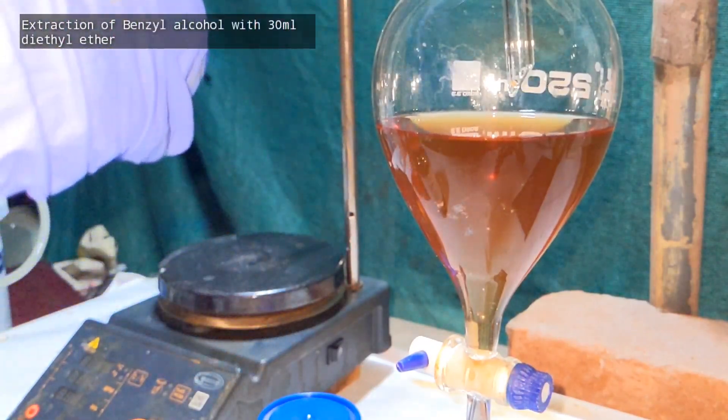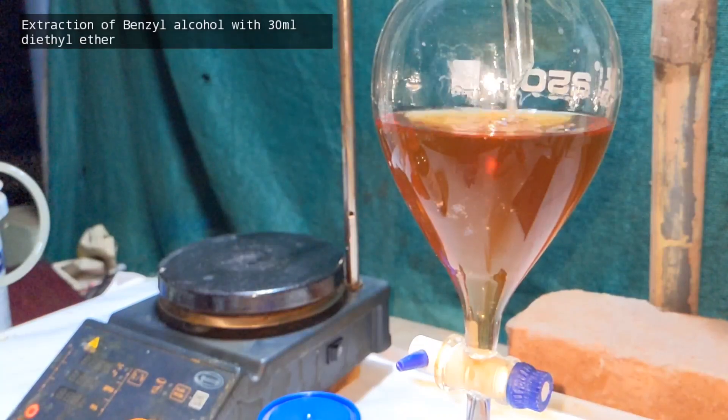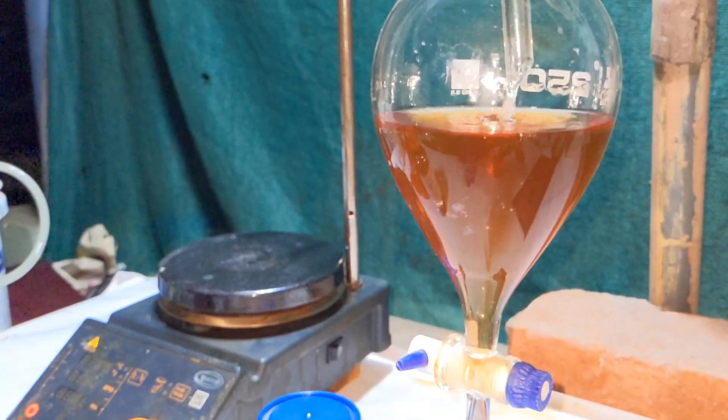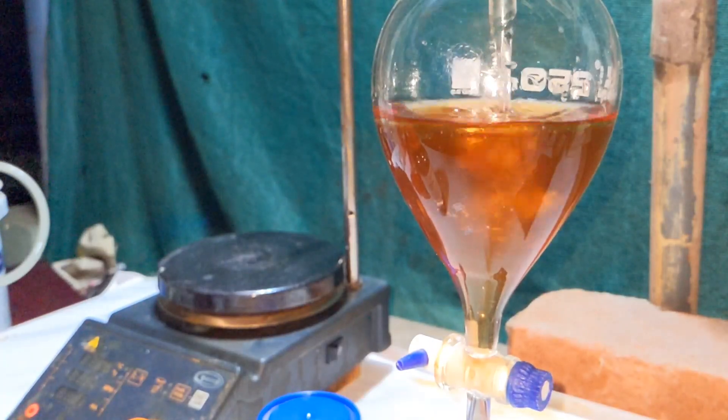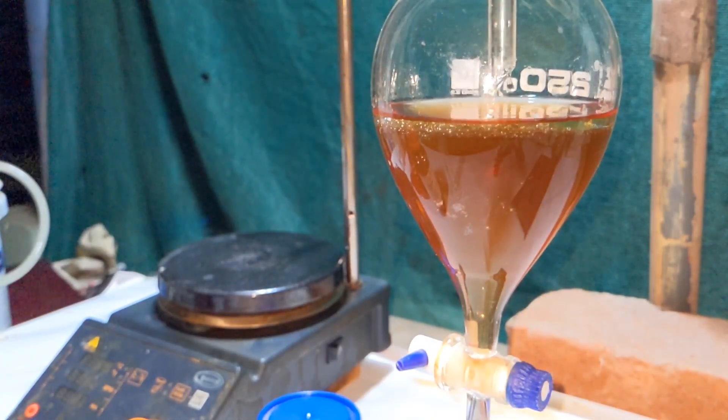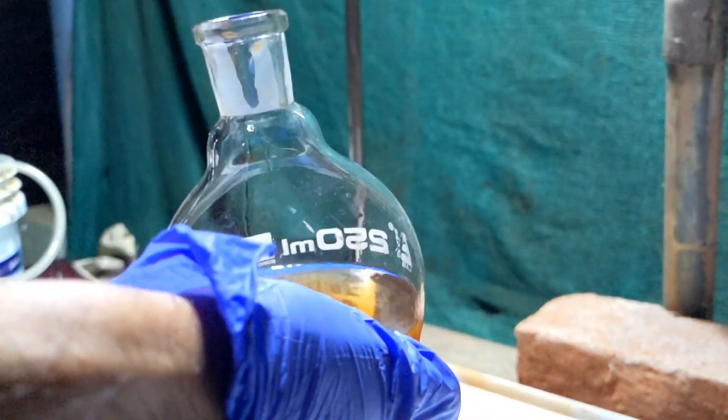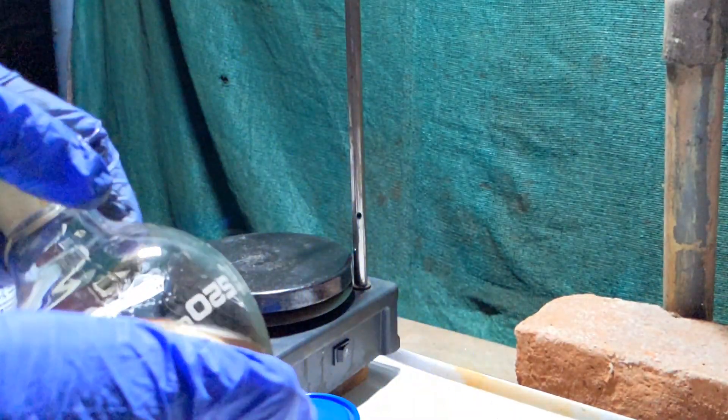We have to wash the contents of the separatory funnel 5 times with 30 ml of diethyl ether each time. Here I have added the first batch of 30 ml of diethyl ether. The separatory funnel was then taken out of the clamp and it was capped and then shaken with frequent venting to release the internal pressure.